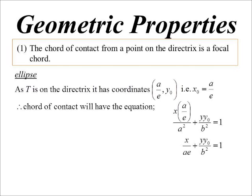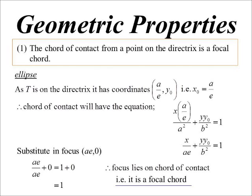Now, the chord of contact, then, will have the equation. Remember the equation we said was x times x0 on a squared. Well, now it's x times ae on a squared, which tidying it up, we just get x over ae. But we want to show it's a focal chord. Well, the easiest way of doing that is substituting in the focus into the left-hand side, and hopefully it'll equal 1. So if we sub in ae, 0, sure enough, I end up with 1. So yes, that particular line does go through the focus, so it must be a focal chord.